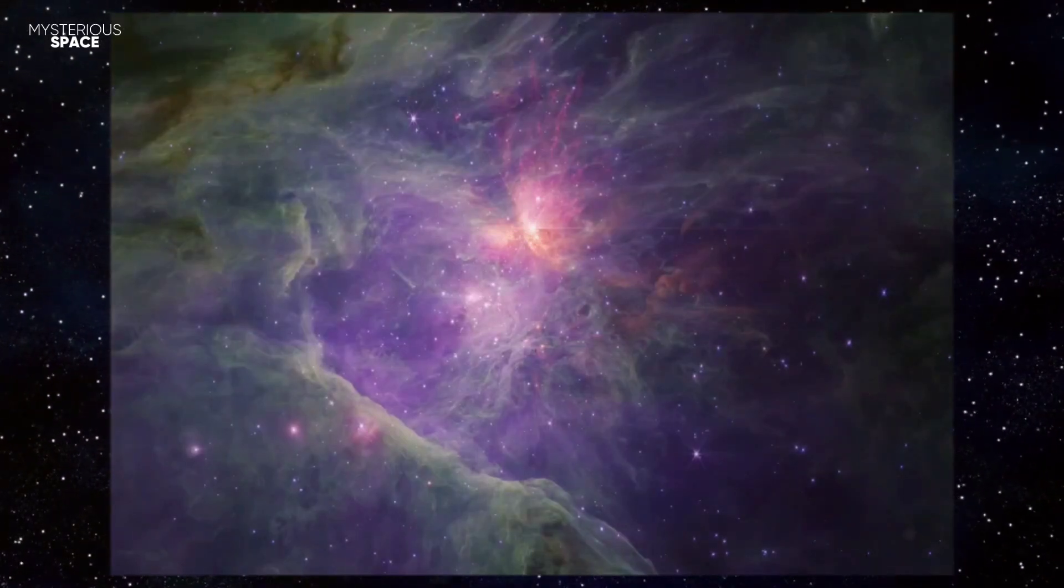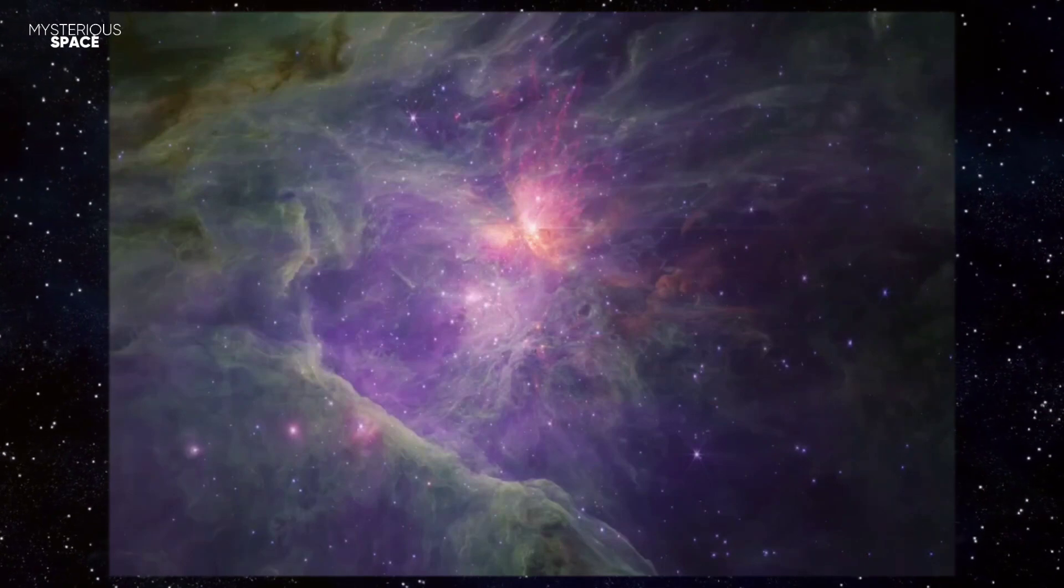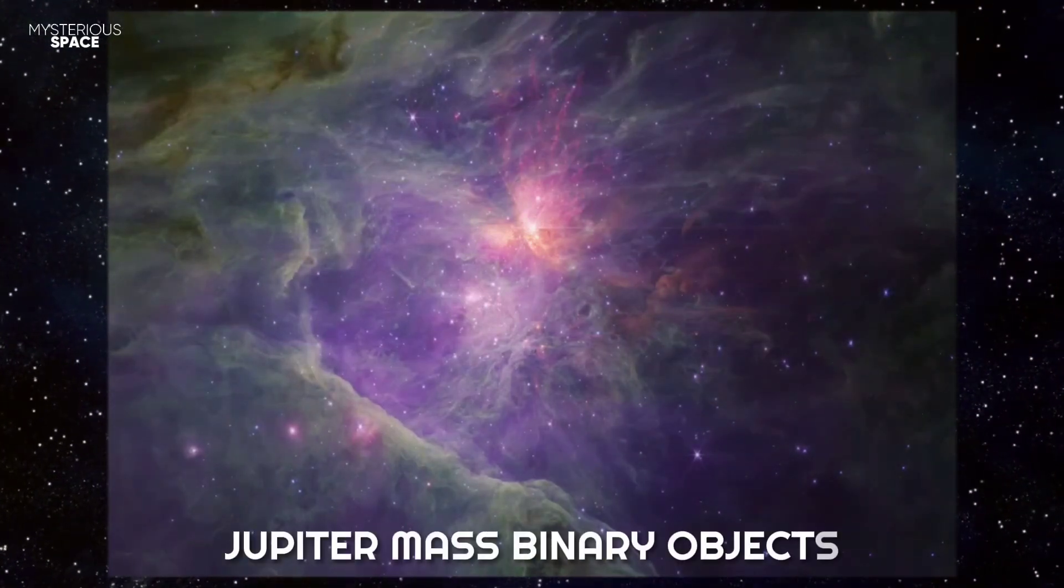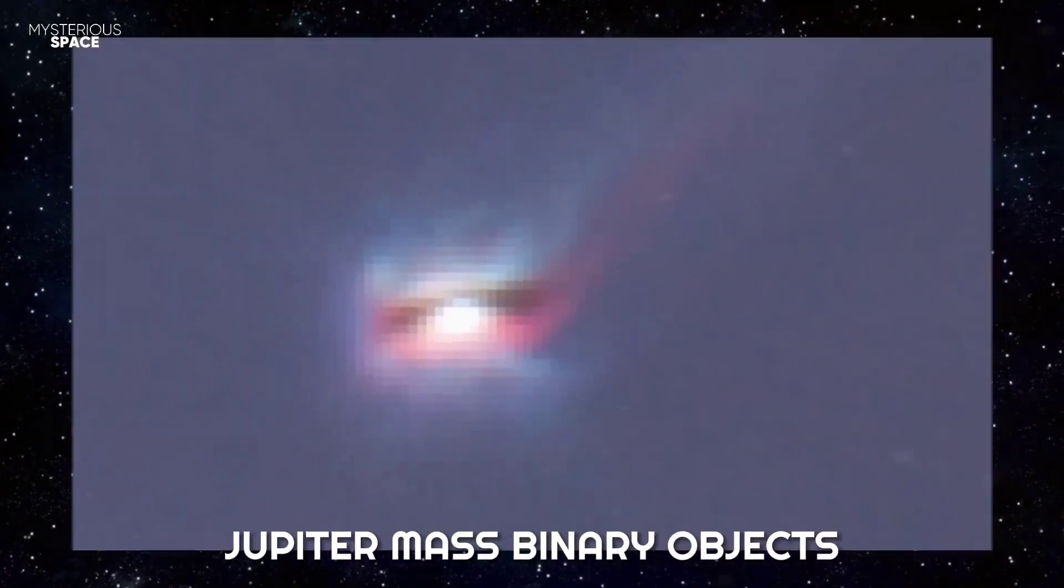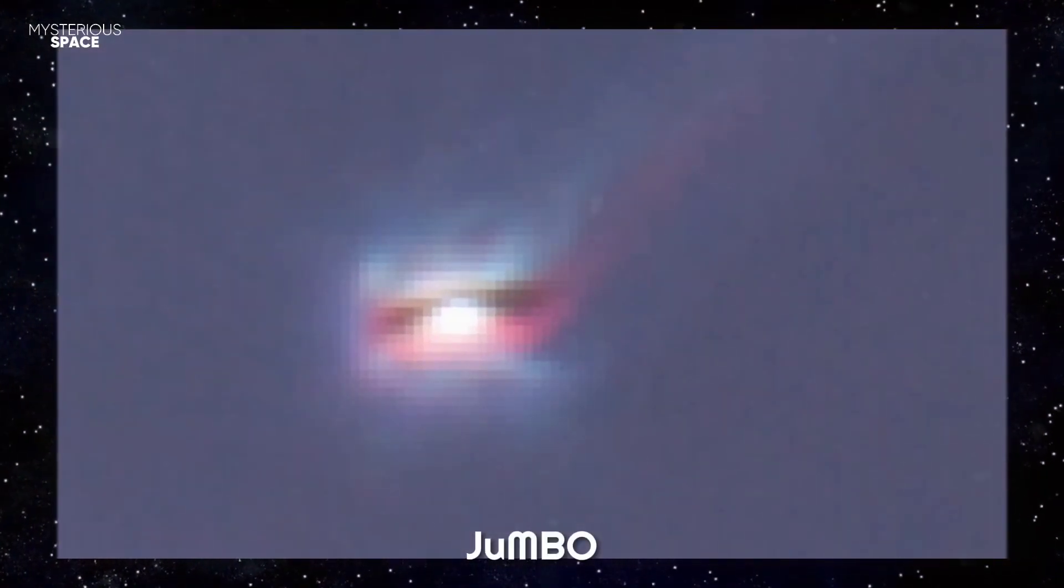And that's what it did recently. It was pointed at the Orion Nebula, and there it discovered a very interesting type of object. These objects are called Jupiter Mass Binary Objects, also nicknamed JUMBO.